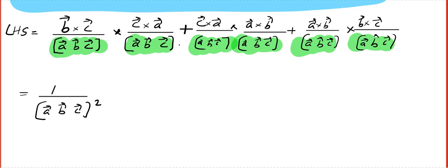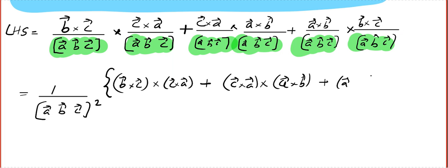We are going to get 1 by STP squared. This will be square, square, square. So that comes common. The remaining part will be B cross C cross C cross A plus C cross A cross A cross B plus A cross B cross B cross C.